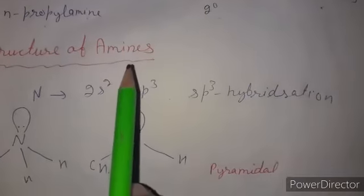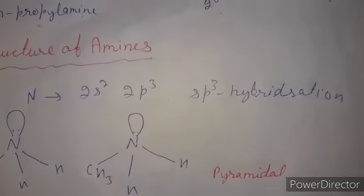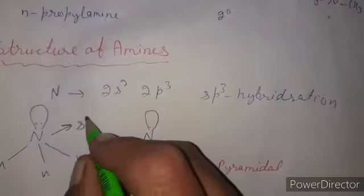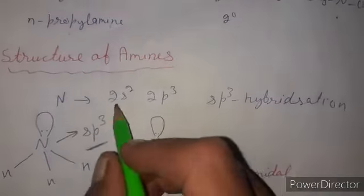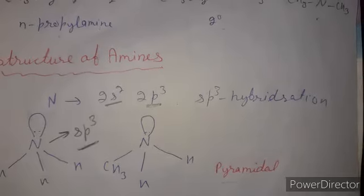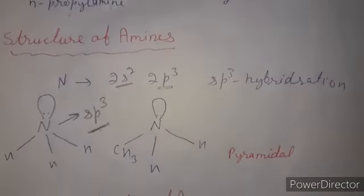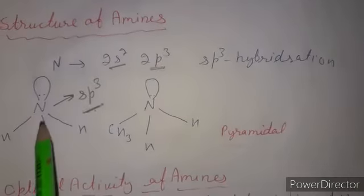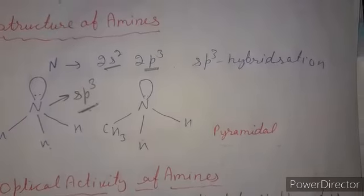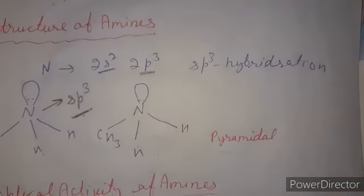Now we discuss the structure of amines. Amines are derivatives of ammonia where one or more hydrogen atoms are replaced by alkyl or aryl groups. The structure of amines is similar to ammonia — pyramidal — due to the presence of a lone pair on nitrogen. The hybridization of nitrogen is sp3, combining one s and three p orbitals. Due to the presence of the lone pair, the structure is pyramidal; however, based on hybridization it is tetrahedral. The H-N-H bond angle in ammonia is 107°, but in trimethylamine it is about 108° due to the bulky alkyl groups.